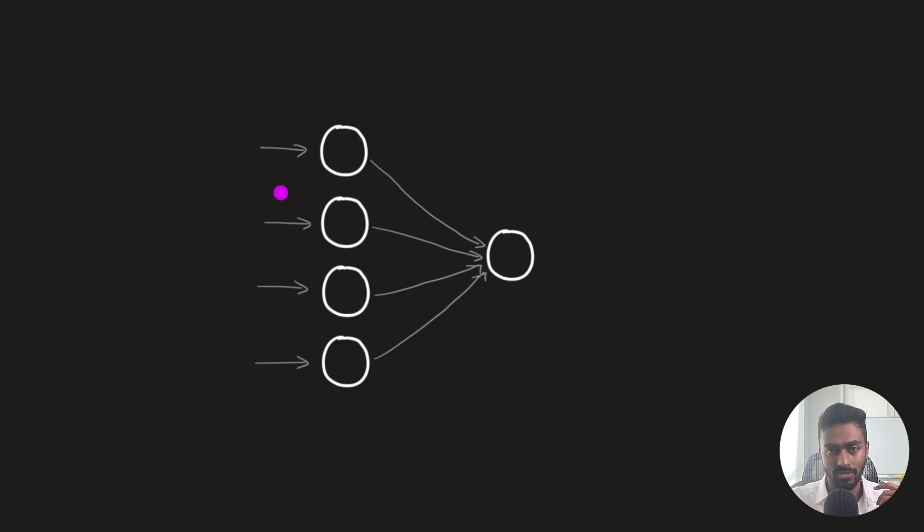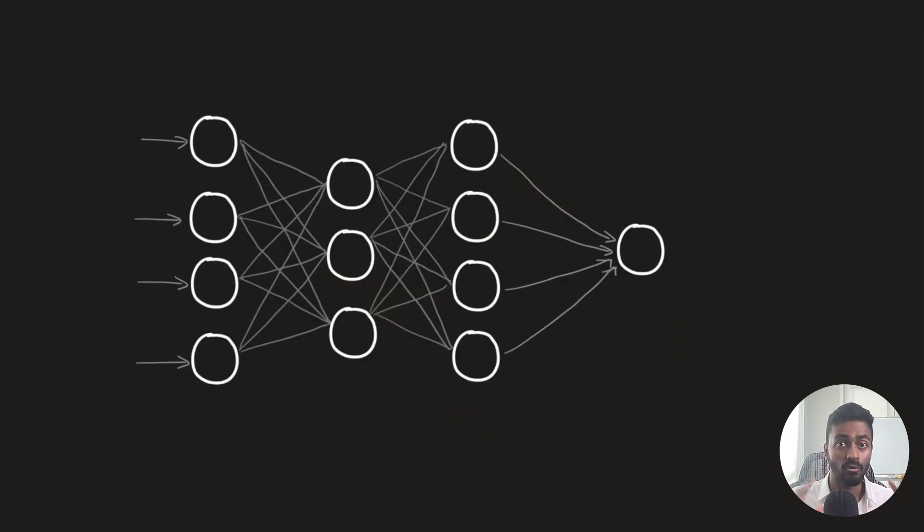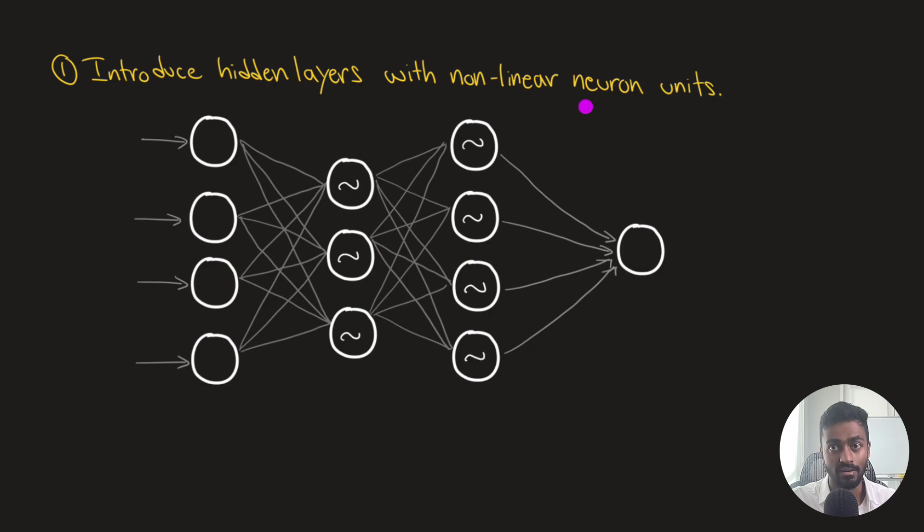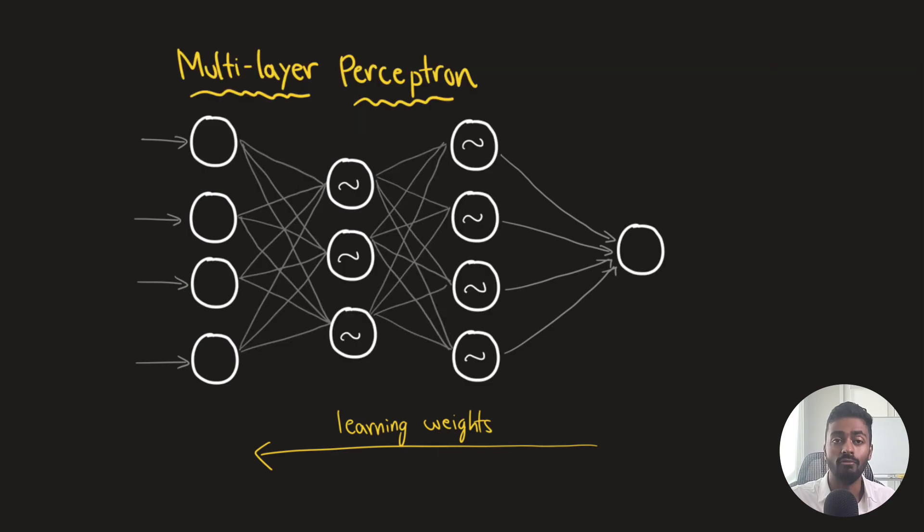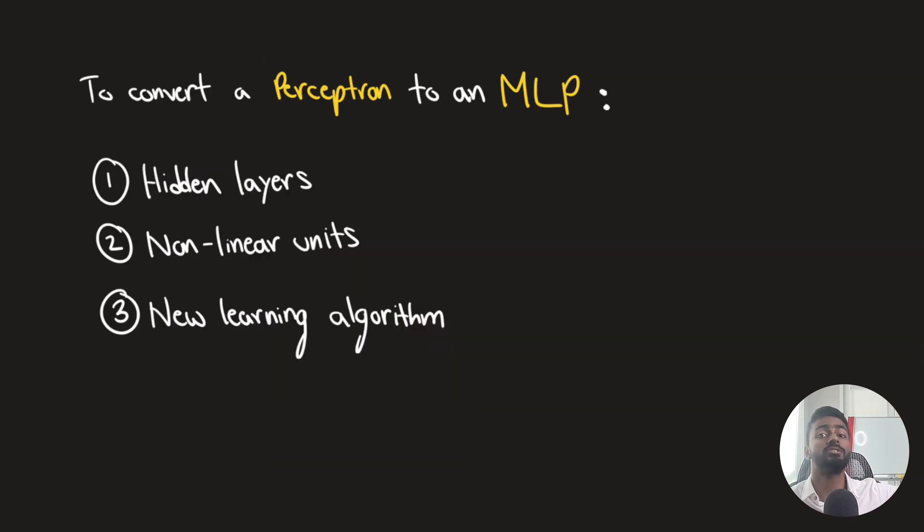So this here is the perceptron architecture, the original perceptron architecture. Now in order to convert this to a multi-layer perceptron, as we call today, we will introduce hidden units. These hidden computation units are going to be non-linear functions. So we introduce hidden layers with non-linear neuron units. And then we replace the perceptron convergence learning procedure with the backpropagation of errors learning procedure. And this is now what we call the new multi-layer perceptron, as we understand and call it today.